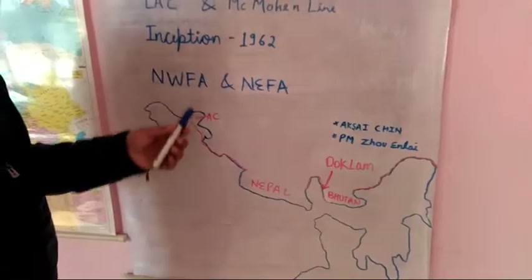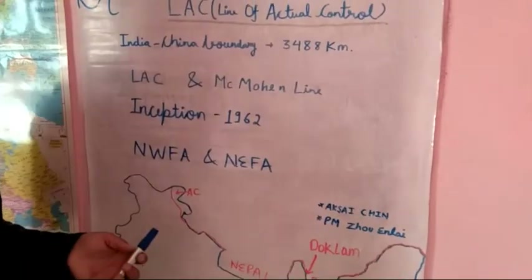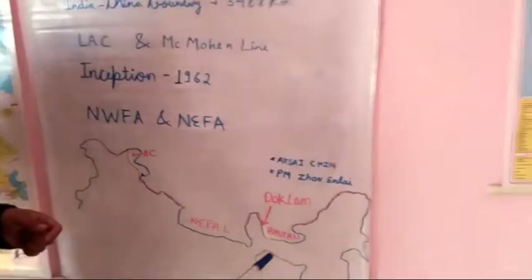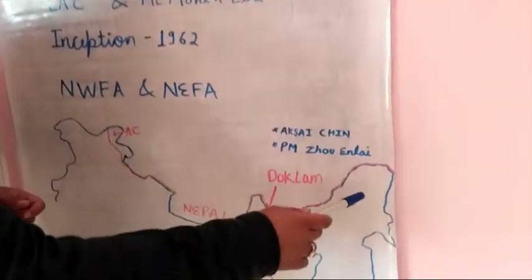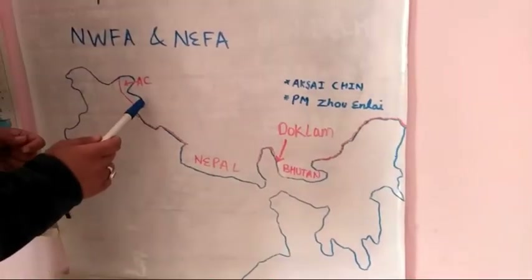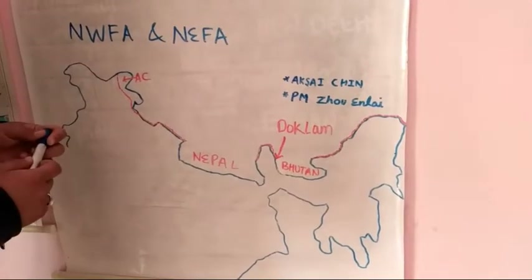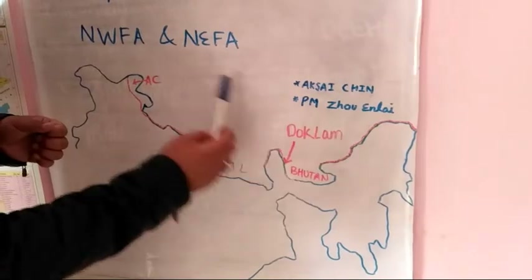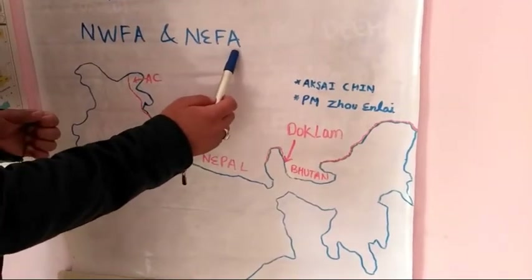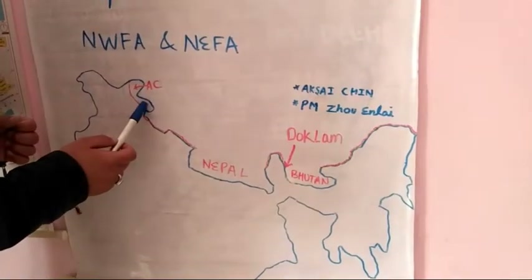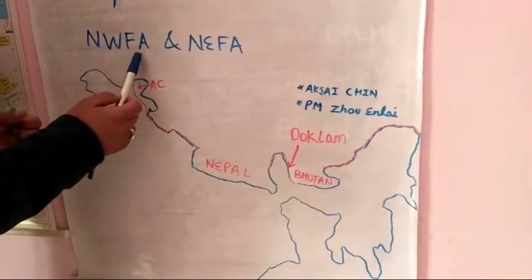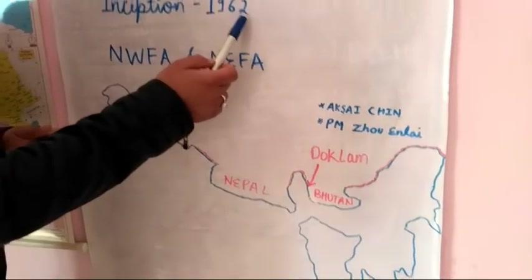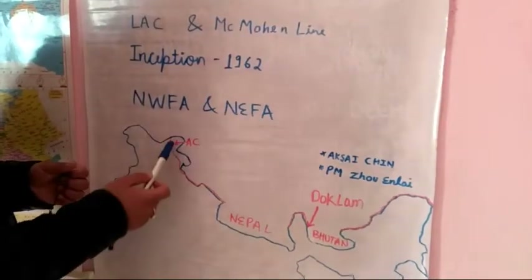If we look at the 1962 war, it had taken place in both theaters — the North-Eastern theater and the North-Western theater. China claims that the region of Arunachal Pradesh belongs to China as its North-East Frontier Agency, and the region of Jammu-Kashmir is its North-West Frontier Agency. All the major battles of the 1962 war took place in these areas.